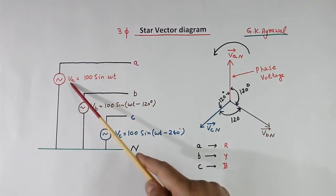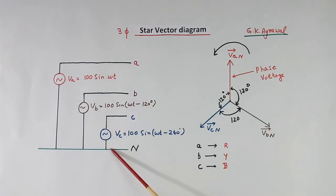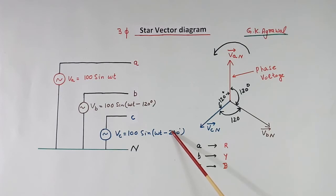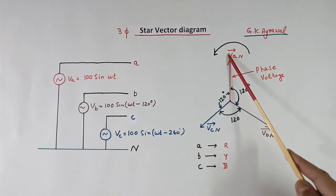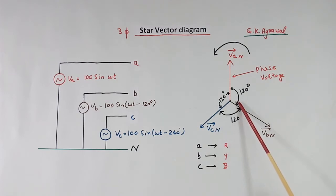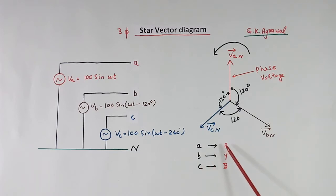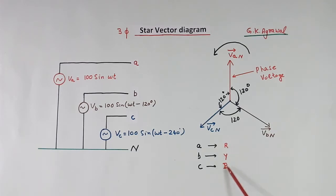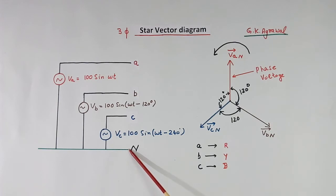This is the phase voltage between A and neutral. Similarly, phase voltage of B and phase voltage of C. In industry, A, B, C are called R, Y, B — R for red, Y for yellow, B for blue. Either wires of red, yellow, and blue color are used, or they are marked using those colors. The neutral may be either green color or black color.